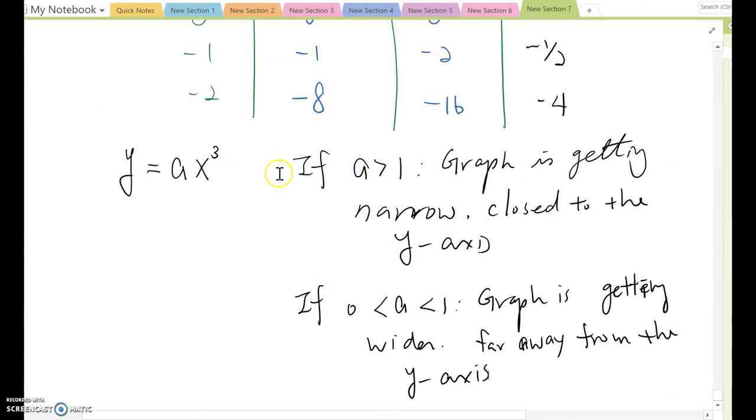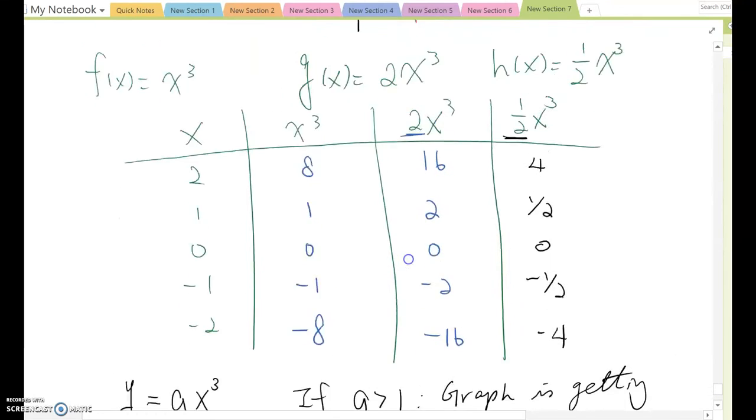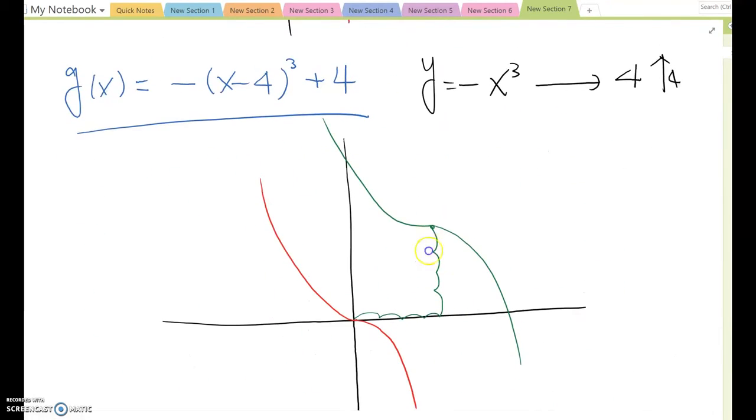Therefore, when we talk about this property, it is centering on positive x cube graph. If it becomes negative x cube graph, the graph is opposite direction like this.